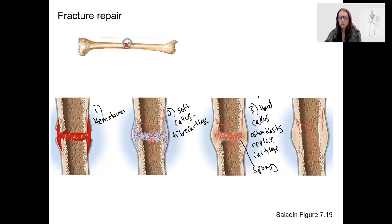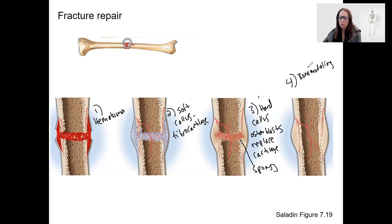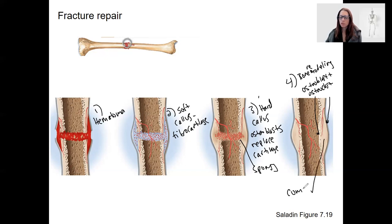At the point of the hard callus of spongy bone, the fracture is usually healed enough to withstand normal muscle contraction forces, but it's not actually done yet. What happens last is bone remodeling — osteoblast and osteoclast activity to turn that spongy bone into compact bone, which is stronger. Osteoblast activity is the primary driver, with osteoclasts helping to remodel.